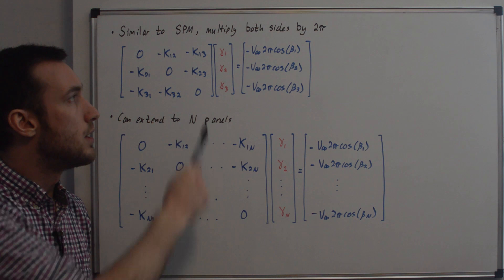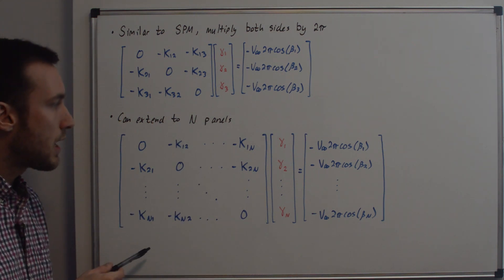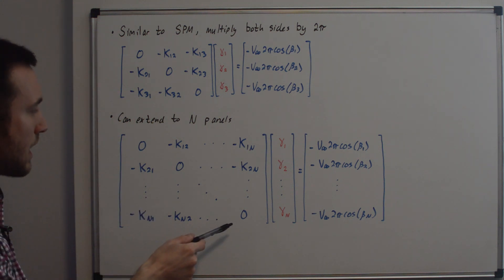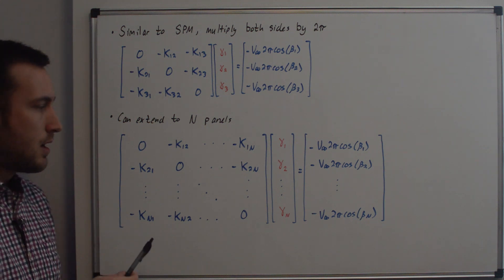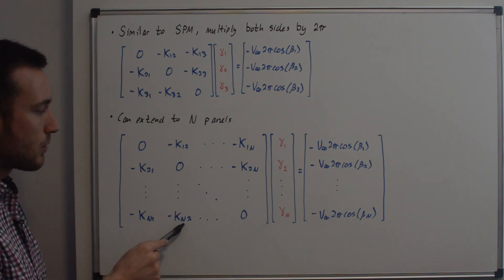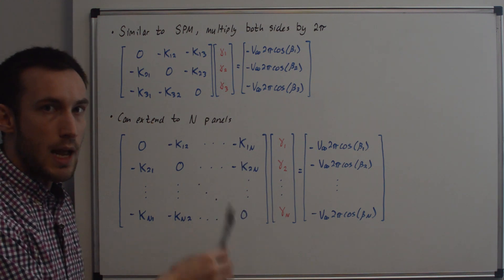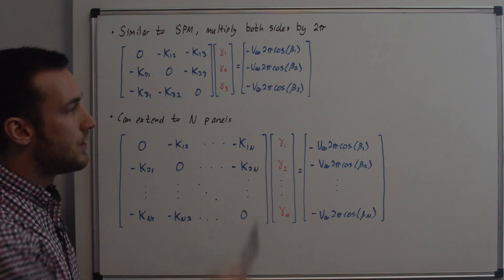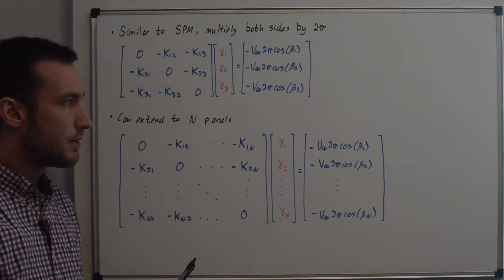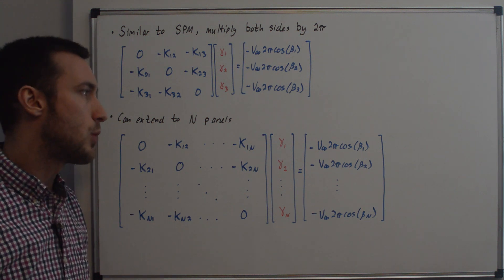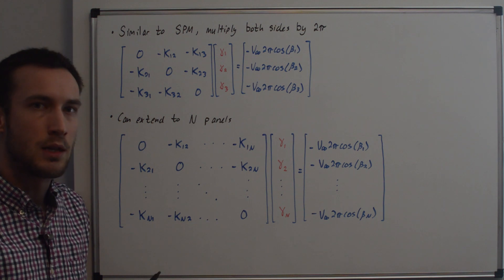The system for the three-panel geometry can be extended to n panels. We see the zeros on the main diagonal again, and solving for the velocity on the i equals n panel gives n in the first index position. The column for j equals n gives n in the second position. At this point you might think we have n equations and n unknowns and can solve it the same way as the source panel method — but the problem is that we haven't applied the Kutta condition yet.